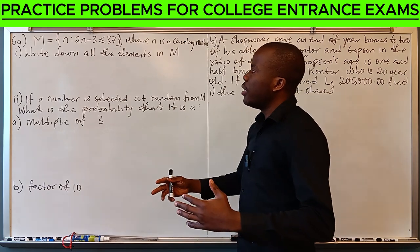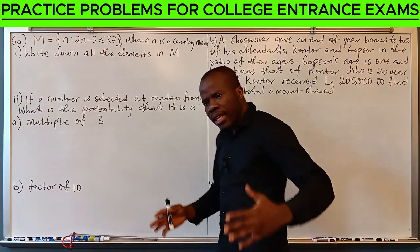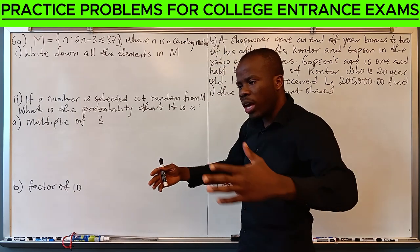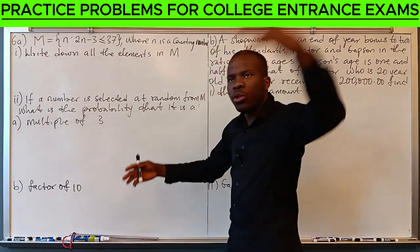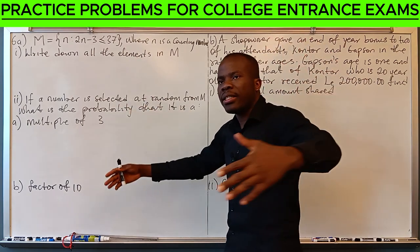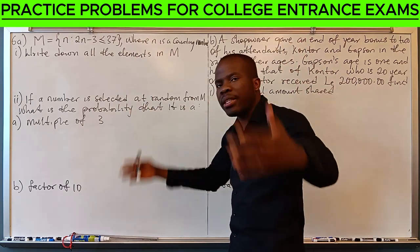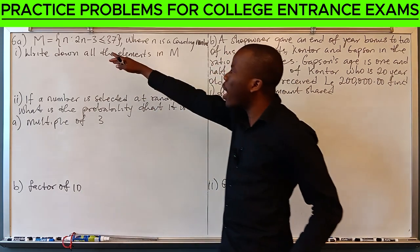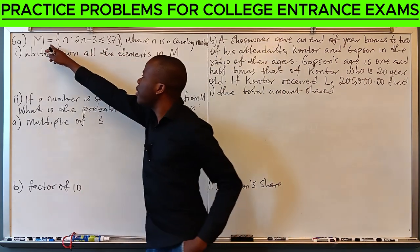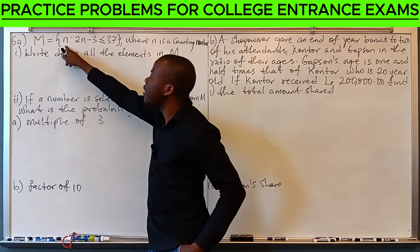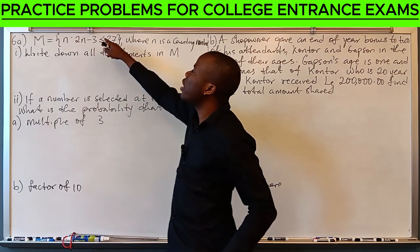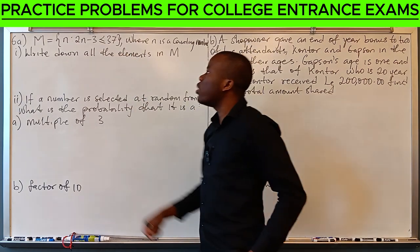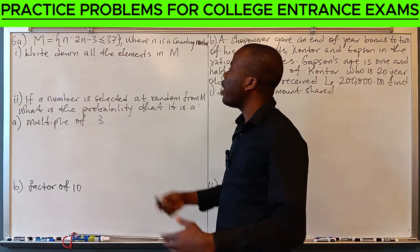They define M in set builder notation. We can use various ways, we can use interval form where we use the brackets, the square brackets and the parenthesis. But in this case they use set builder notation. We must know how to read this. M is the set of N such that 2N minus 3 is less than or equal to 37. So, we have to solve this inequality to find what N is, the range of N.